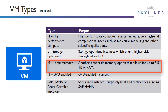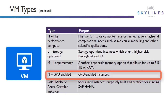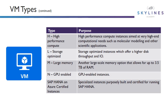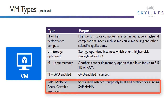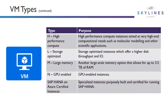Then we've got the M series, another very large memory series. These go much larger than the E series — you can go up to 3.5 terabytes of RAM. Then we have the N series, divided up into NV and NC depending on the type and configuration you require. These are graphics card-enabled instances. Finally, we have SAP HANA on Azure certified instances as well. So as you can see, just a ton to choose from.